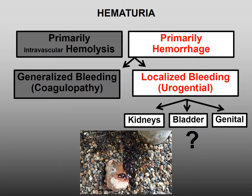Let's ask another question. If it's local bleeding, is it the kidneys, the bladder, or the genital tract? Usually when you have bleeding from the genital tract, it is independent of urination — that is not occurring in our dog. Very few bladder diseases are associated with this much blood. Therefore, it is likely to come from the kidney.